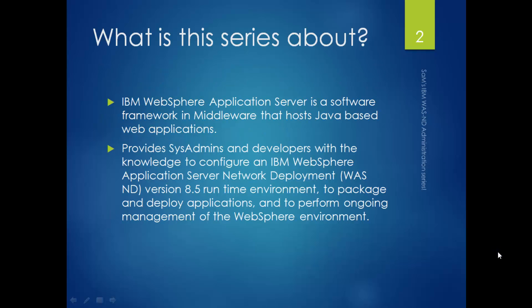What is this series about? We are going to talk and learn about IBM WebSphere Application Server, also known as IBM WAS. Essentially, as the name says, it's an application server and it's a software framework and middleware that hosts Java-based web applications. This course provides system admins and developers with the knowledge to configure an IBM WebSphere Application Server Network Deployment version 8.5.5 runtime environment, to package and deploy applications onto that particular instance, and to perform ongoing management of the WebSphere environment. The version we are going to cover is IBM WAS 8.5.5, specifically WAS ND — the Network Deployment version — which is used for distributed environments and is used by almost all companies across the globe.